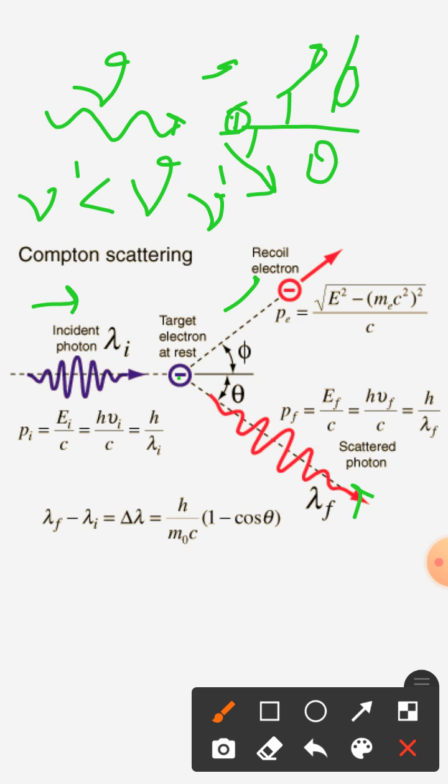So here we will apply the momentum and energy conservation laws to solve this problem. We take this x-axis, this y-axis. This is our photon coming in its direction and this is the electron direction. This is angle phi, this is theta.